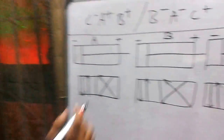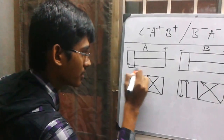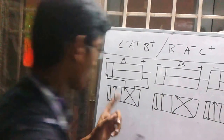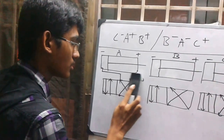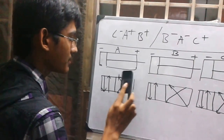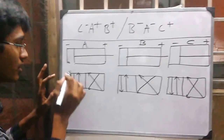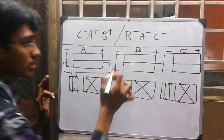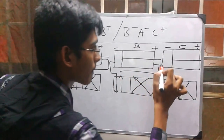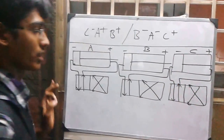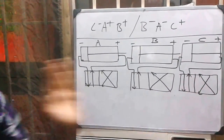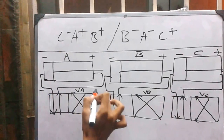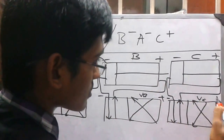Now we have to give proper connection to the DCV. Watch carefully: the negative is connected to this part and the positive is connected to the other part — this is a common mistake people make. So the negative is connected to this one and the positive is connected to this one. Now we have given proper connection to this DCV. We name them VA, VB, and VC DCV, with signs: minus, positive, minus, plus, minus, plus.